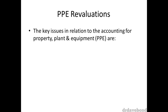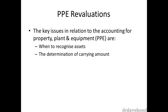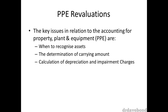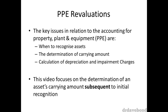There are three key issues in relation to the accounting for property, plant and equipment. These are: one, when to recognise assets; two, the determination of the carrying amount of the asset in question; and three, the calculation of depreciation and impairment charges. This video focuses on the determination of an asset's carrying amount subsequent to initial recognition.